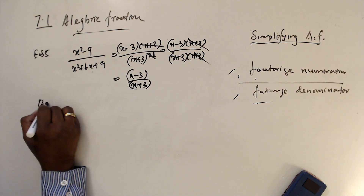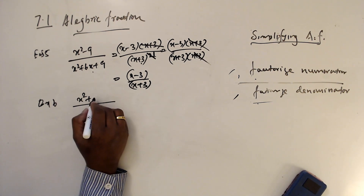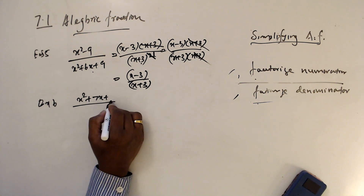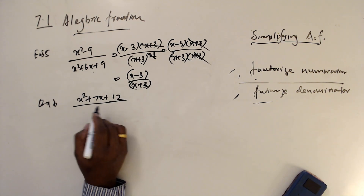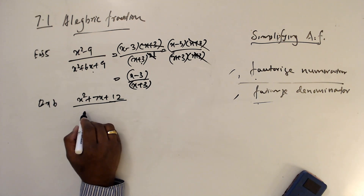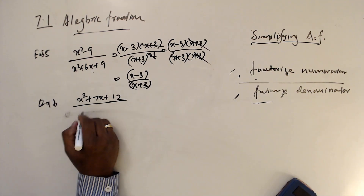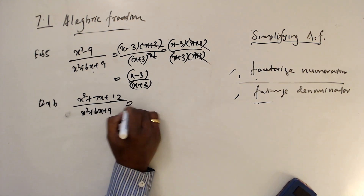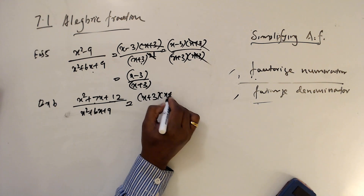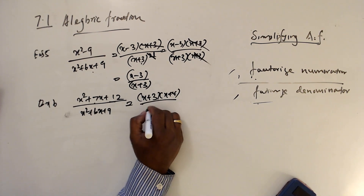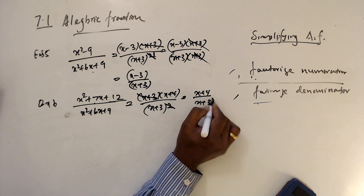Example 6: (x² + 7x + 12) over (x² + 6x + 9). Factorize the numerator: (x + 3)(x + 4). The denominator factors as (x + 3)². Cancel (x + 3), leaving (x + 4) over (x + 3).